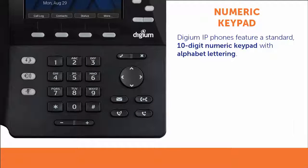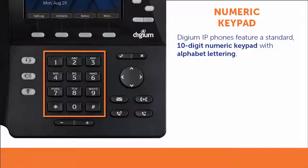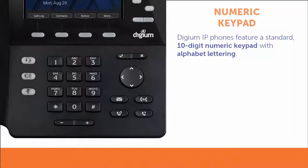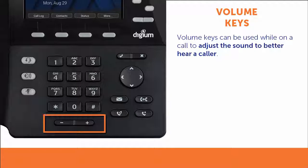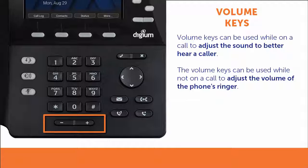Digium IP phones feature a standard 10-digit numeric keypad with alphabet lettering. Volume keys are located below the numeric keypad. While on a call, the volume keys can be used to adjust the sound to better hear a caller. When not on a call, these keys can be used to adjust the volume of the phone's ringer.